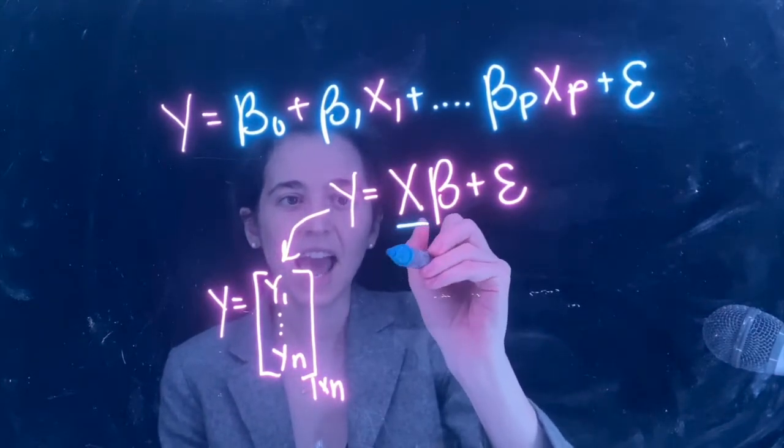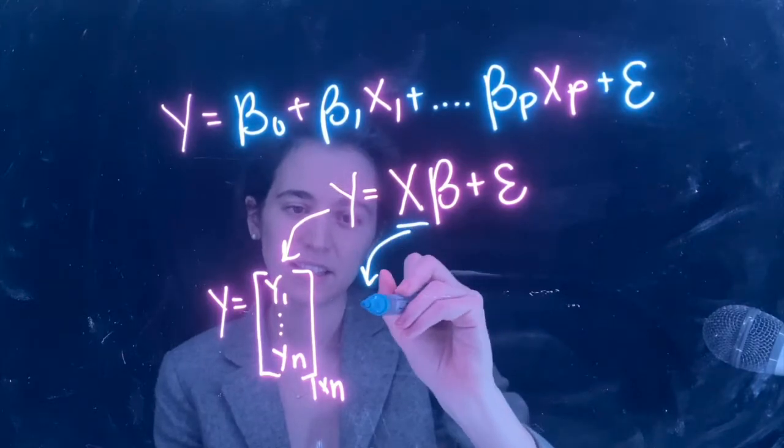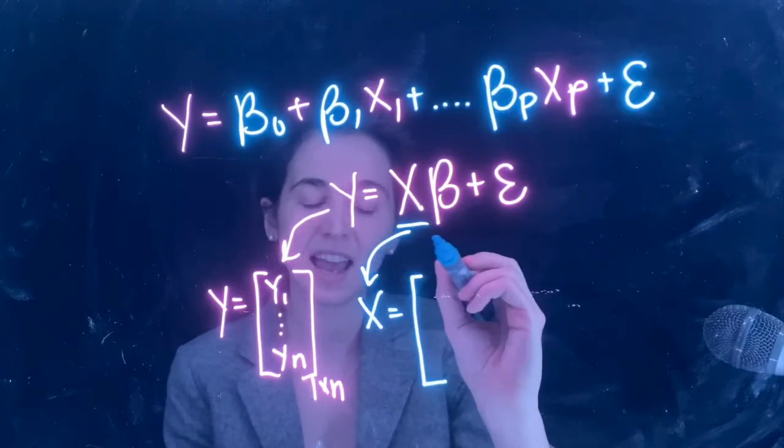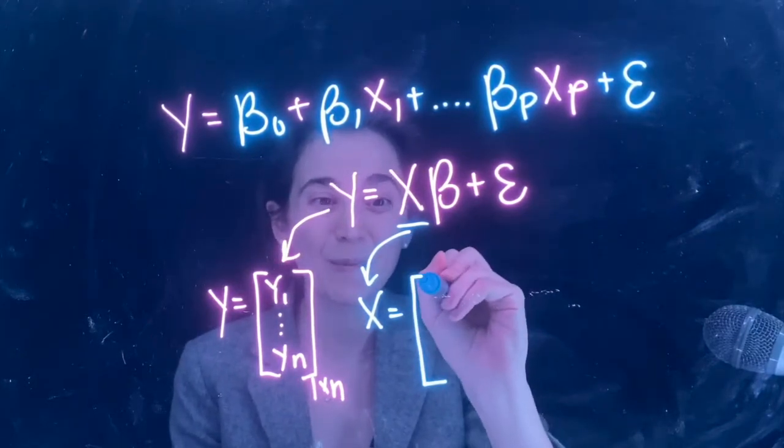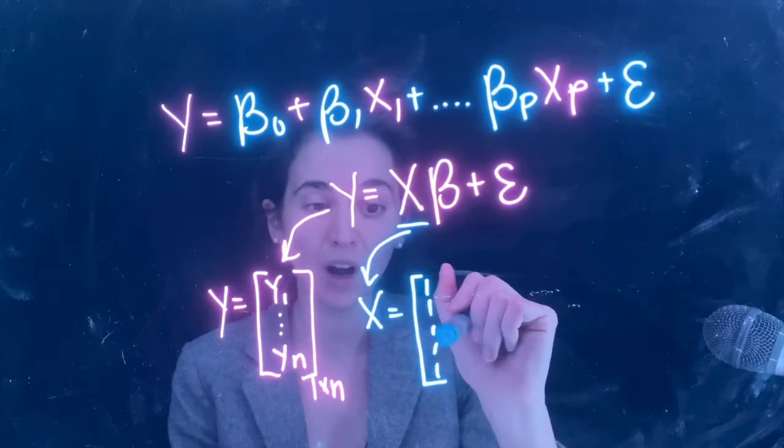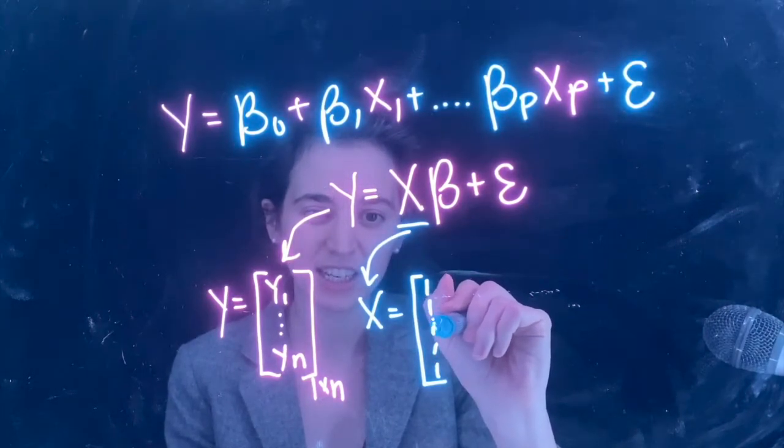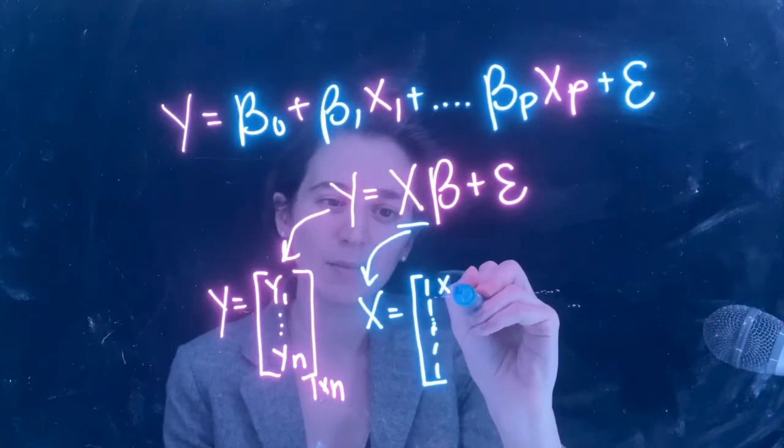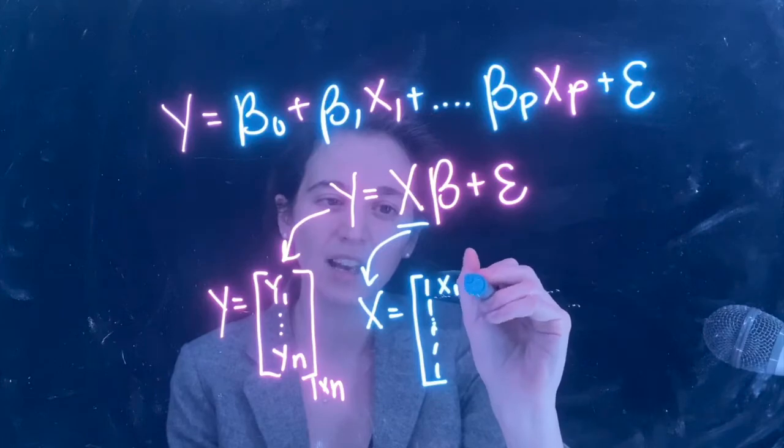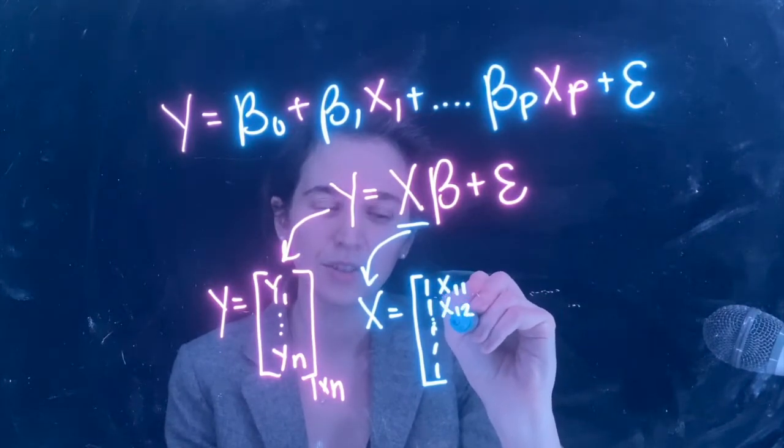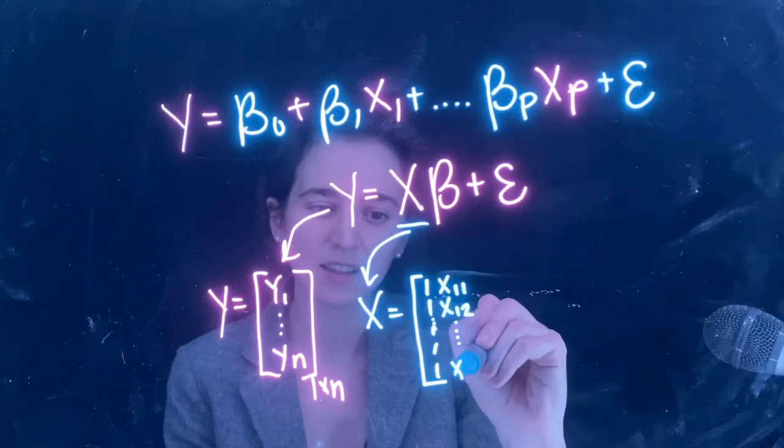Now let's do x. X is a matrix, and so this is a design matrix. Here this should look familiar from what you did in the lab. So the first column of the design matrix is all ones. The first column is going to be your first variable x1, and then we've got x12 all the way down to x1n.